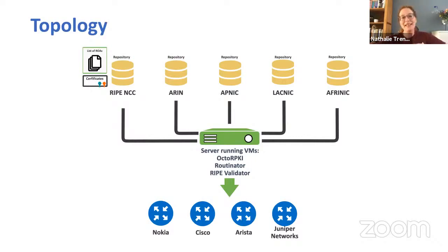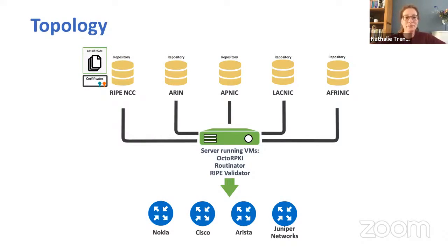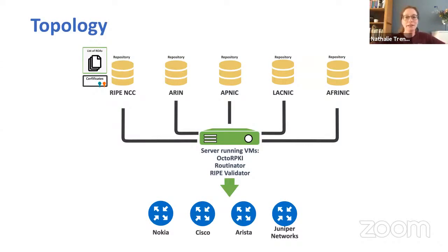A validator is a piece of software that you have to install and run in your own network — because you're the boss of your own network — to make the routing decisions. There are several validators out there. Today, we'll be demoing OctoRPKI, Routinator, and RIPE NCC validator. But there's also Fort, and there is rpki-client for OpenBSD. Those validator softwares plug into the routers, feeding the data so routers can make their actual BGP routing decisions.